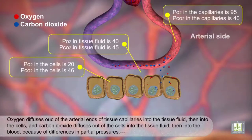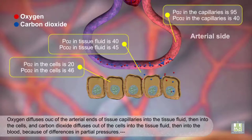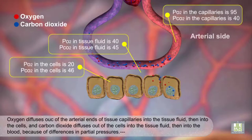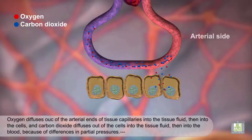Oxygen diffuses out of the arterial ends of tissue capillaries into the tissue fluid, then into the cells, and carbon dioxide diffuses out of the cells into the tissue fluid, then into the blood, because of differences in partial pressures.